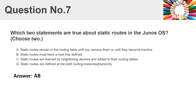Question number seven. Which two statements are true about static routes in the Junos OS? Choose two. A. Static routes remain in the routing table until you remove them or until they become inactive. B. Static routes must have a next hop defined. C. Static routes are learned by neighboring devices and added to their routing tables. D. Static routes are defined at the edit routing instances hierarchy. Answer: A, B.